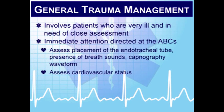For general trauma management of severely injured patients, we're focused on the airway, breathing, and circulation — the ABCs. Any hospital a patient goes to manages based on the Advanced Trauma Life Support (ATLS) guidelines through the American College of Surgeons. Immediate attention is directed to the ABCs because that's what will kill the patient quickest. We're talking about endotracheal tube placement, airway management, breath sounds, end-tidal CO2, cardiovascular status, and trauma resuscitation. We need to get as much medical history as possible from the patient or staff, and perform repeated head-to-toe focused assessments.